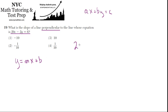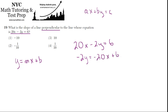So let's take the original line, 20x minus 2y equals 6, and get it into slope-intercept form. We'll subtract 20x from both sides, leaving negative 2y equals negative 20x plus 6. Now divide by negative 2 on both sides, and y equals positive 10x minus 3.